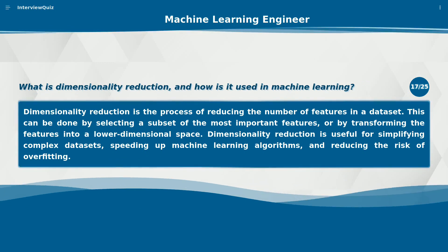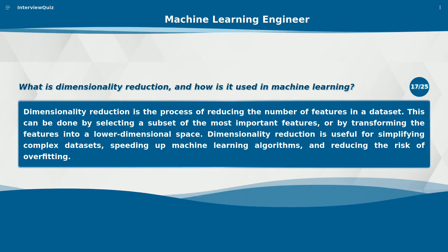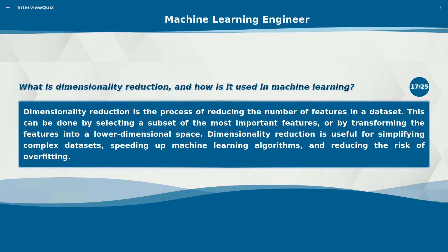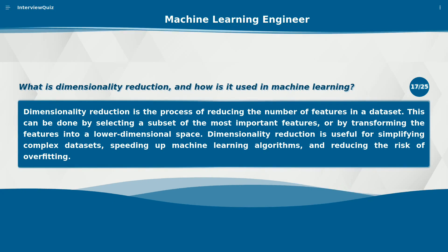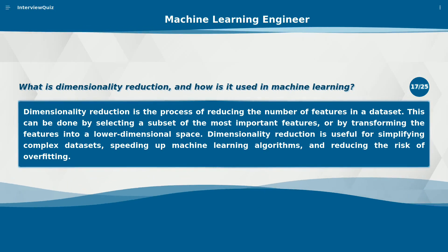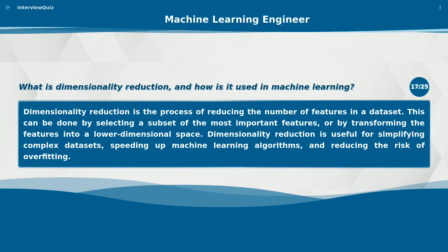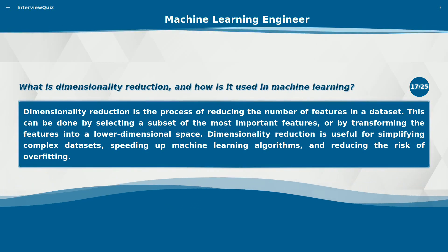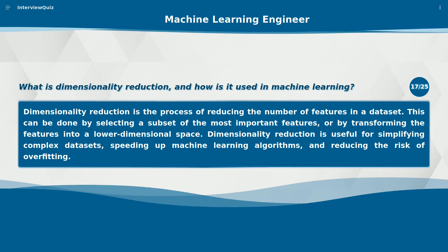What is dimensionality reduction, and how is it used in machine learning? Dimensionality reduction is the process of reducing the number of features in a dataset. This can be done by selecting a subset of the most important features, or by transforming the features into a lower-dimensional space. Dimensionality reduction is useful for simplifying complex datasets, speeding up machine learning algorithms, and reducing the risk of overfitting.